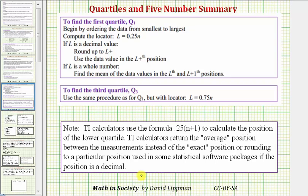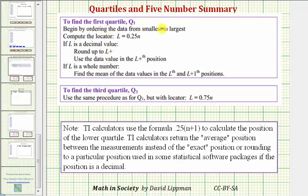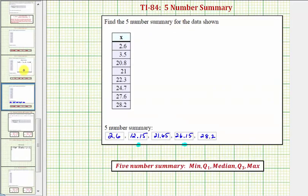In fact, for our class, we don't use the same method as the calculator to find Q1 and Q3. We use the method outlined here above. So before using the calculator for the five-number summary, just make sure your class uses the same method as a TI graphing calculator. I hope you found this helpful.